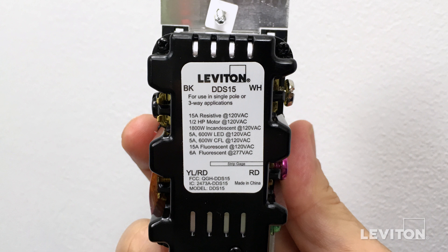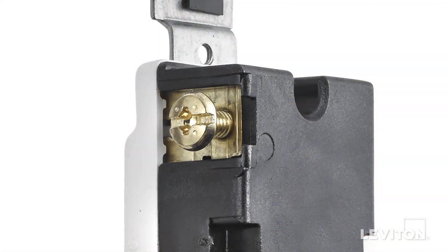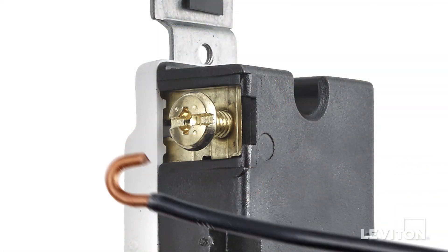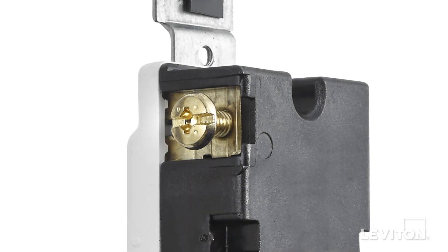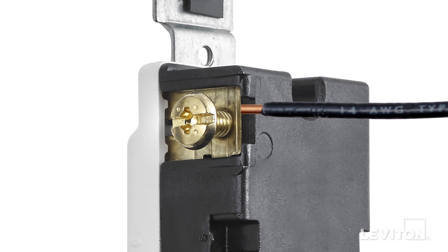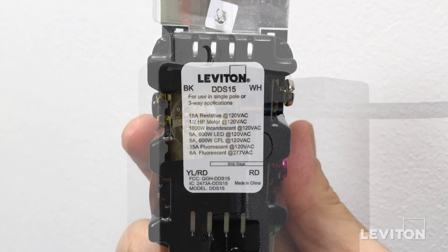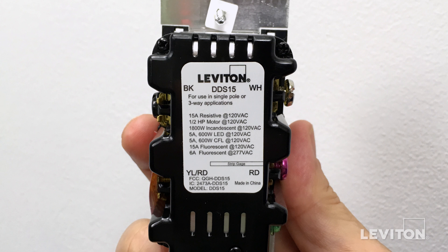This device is equipped with terminal screws and can be wired two ways: side wire or back wire. Side wiring is done by wrapping the conductor around the terminal screw. Back wiring is done by inserting the conductor under the clamp of the terminal screw. For this installation, we will be using back wiring.